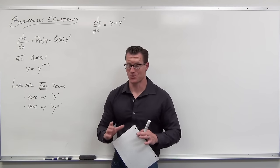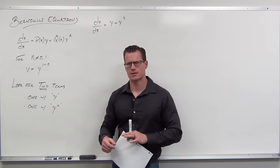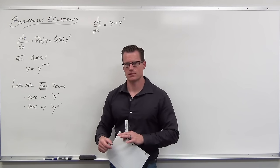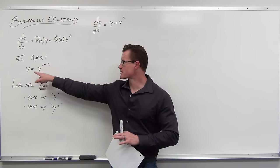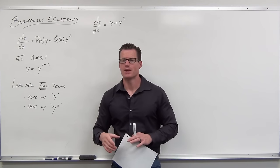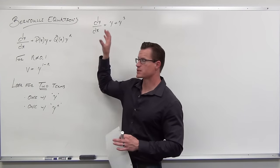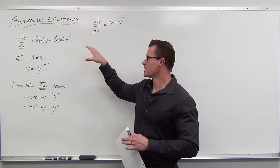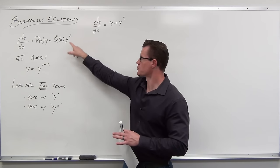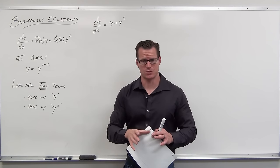If that's the case, and we make this substitution v equals y to the one minus n, here's what happens with these Bernoulli equations. We look at it and go: not separable, not linear, not an easy basic substitution. But wait — I have one term of y to the first, one term of y not to the zero or one power. Let's make this substitution.